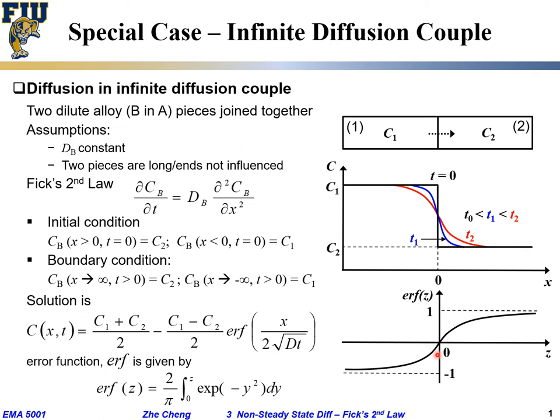We have mathematically described the solution. This is how it's going to look like. For a given location at a given time, I can calculate the local concentration profile, and it doesn't surprise you that this shape looks similar to the error function shape. This is for the so-called infinite diffusion couple.